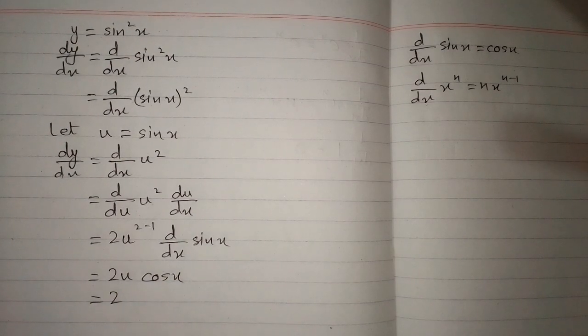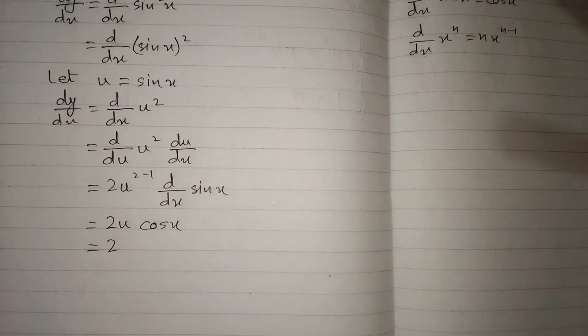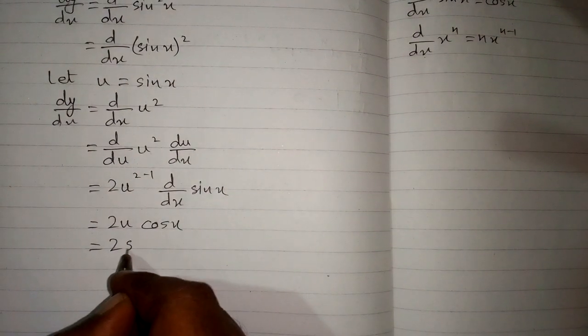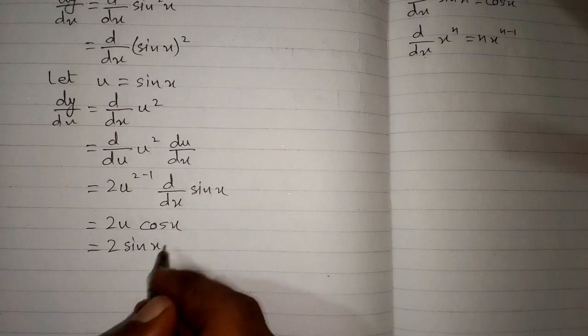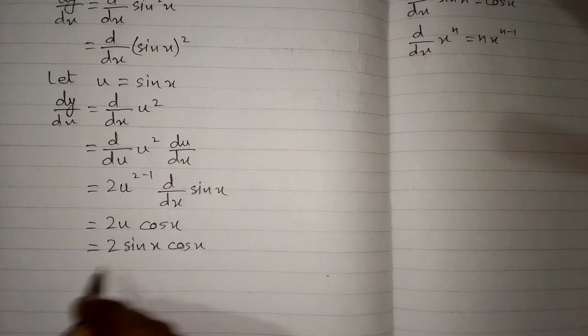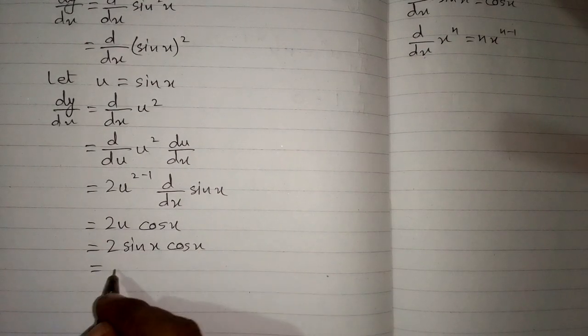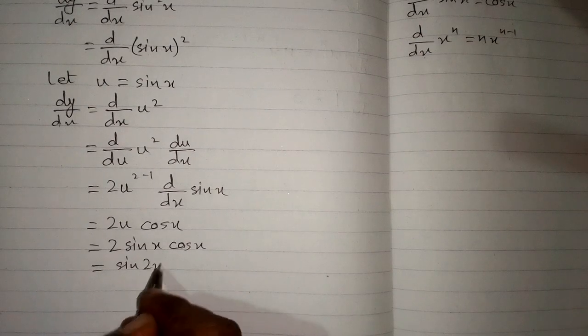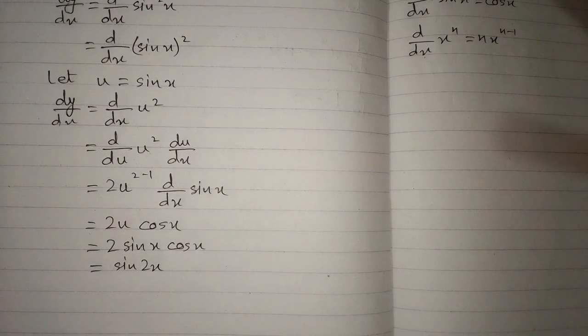Now we substitute the value of u back, giving us 2·sin x·cos x. Using the double angle formula, 2 sin x cos x = sin 2x, which is the required answer.